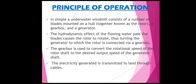Principle of operation: an underwater windmill consists of a number of blades mounted on a hub, a gearbox and a generator. The hydrodynamic effect of the flowing water past the blades causes the rotor to rotate, thus turning the generator connected by a gearbox. The gearbox is used to convert the rotational speed of the rotor shaft to the desired output speed of the generator shaft. The electricity generated is transmitted to land through cables.